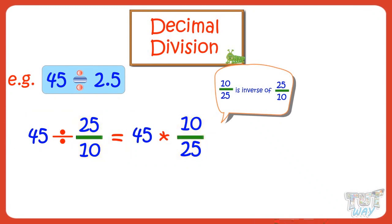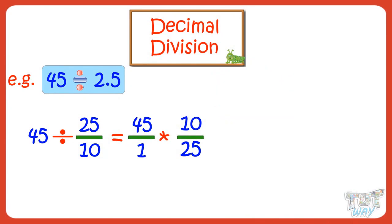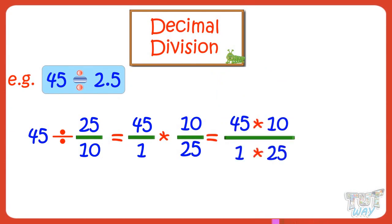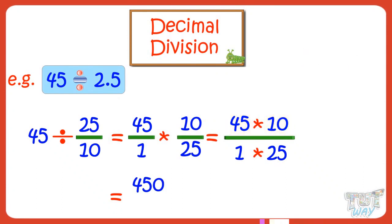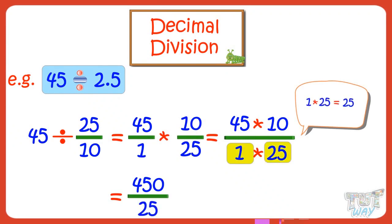45 is the same as 45/1. For solving this, divide the product of numerators by the product of denominators. Product of numerators — that is 45 and 10 — is 450. Product of denominators — that is 1 and 25 — is 25.